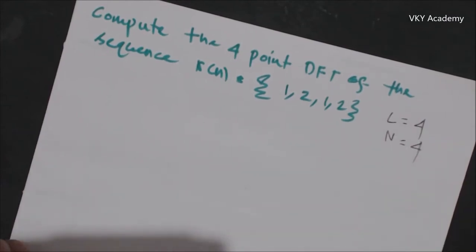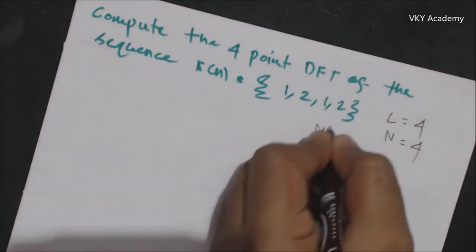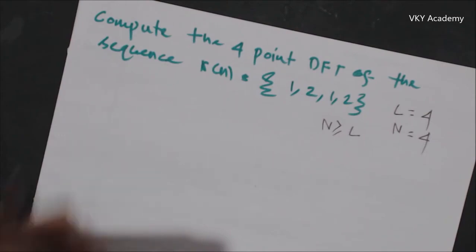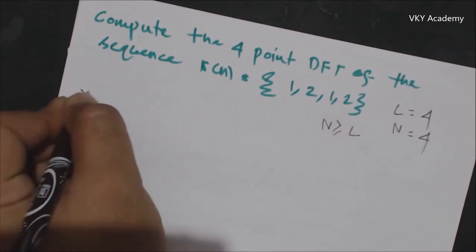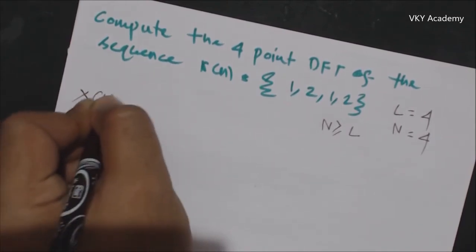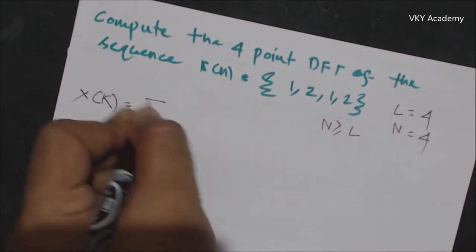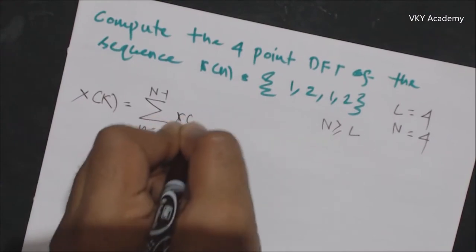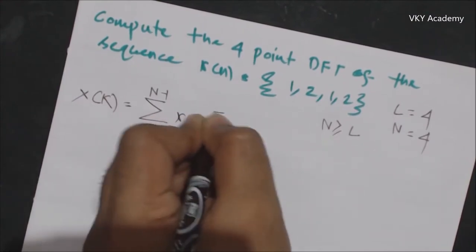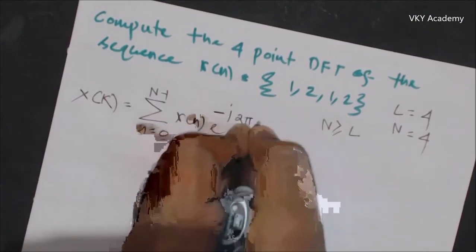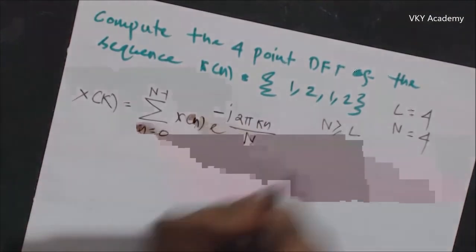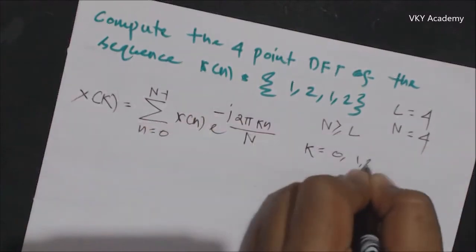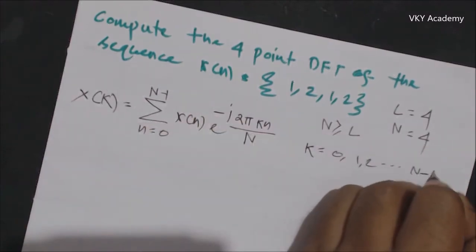In the previous lecture, we discussed that N should always be greater than or equal to L. The DFT function X[k] is always equal to summation n equals 0 to N minus 1 of x[n] e to the power minus j 2 pi k n upon capital N, where k is equal to 0, 1, 2 up to N minus 1.